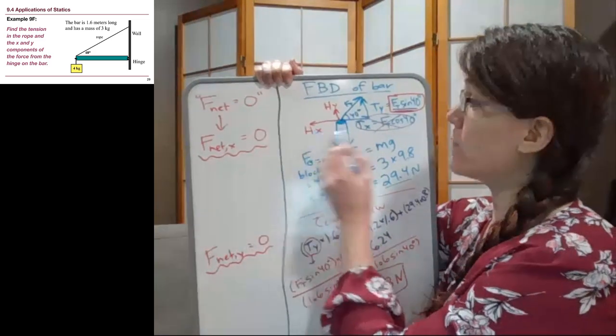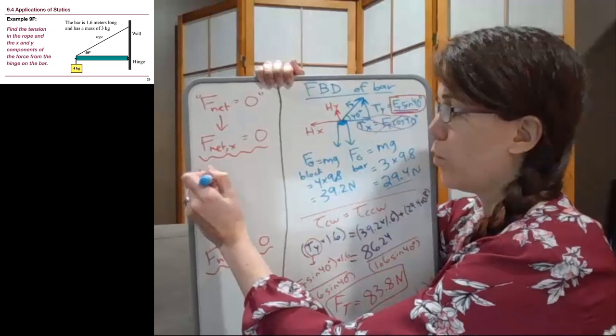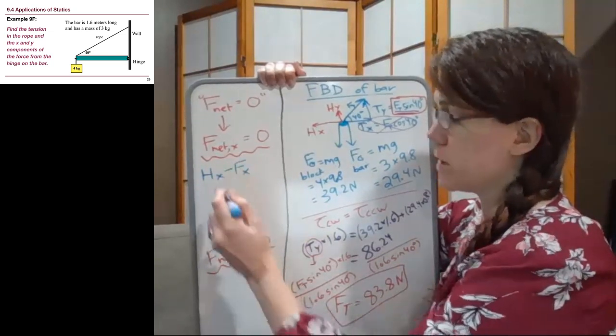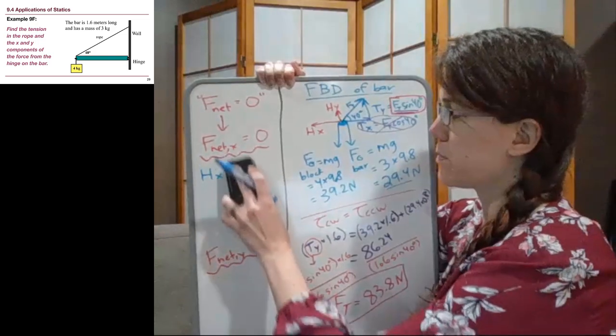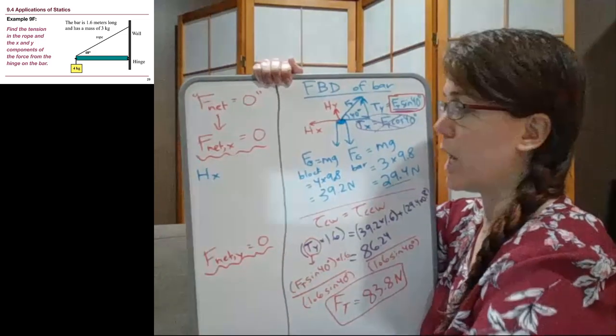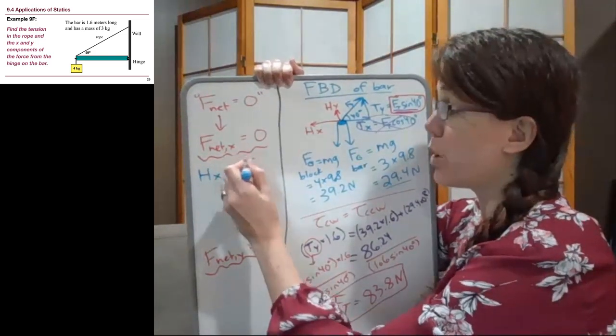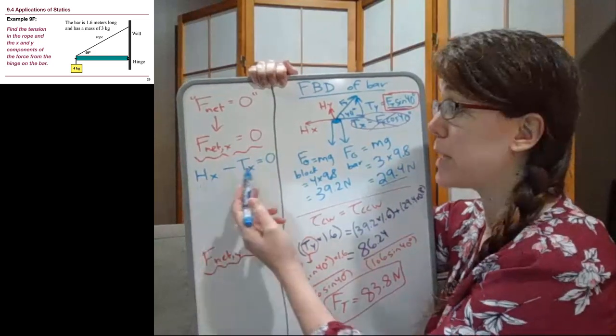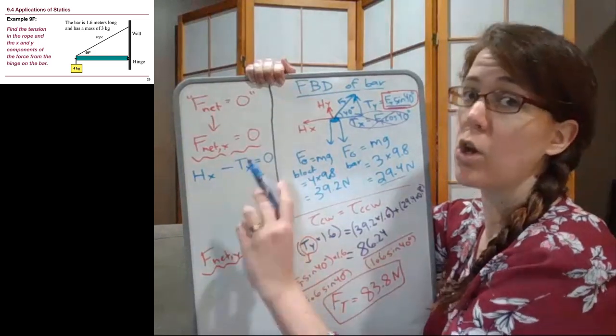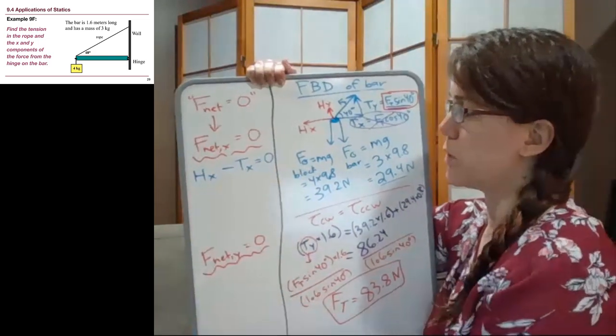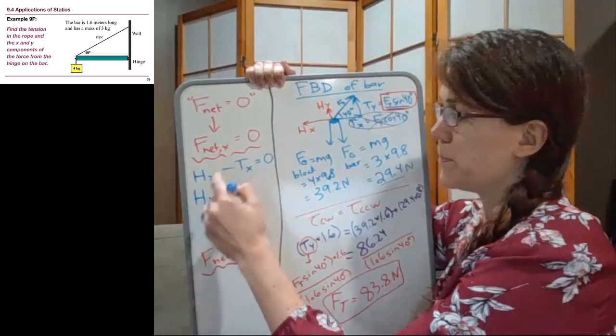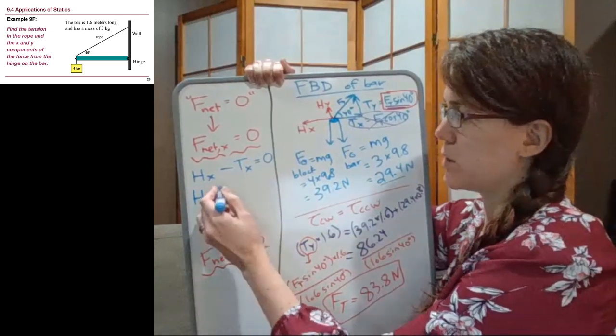So if we look at the forces in the x direction, we have two forces. We can write them in either order, but because they point in opposite directions, we have to have one of them positive and one of them negative. So we could write the hinge force in the x direction minus the tension in the x direction, or tension minus hinge force.